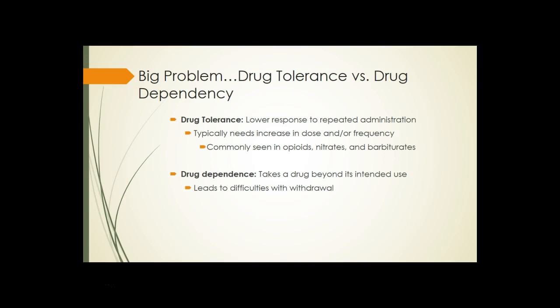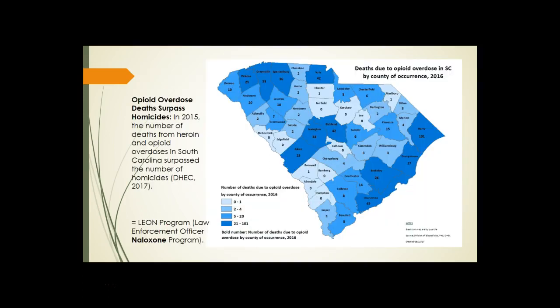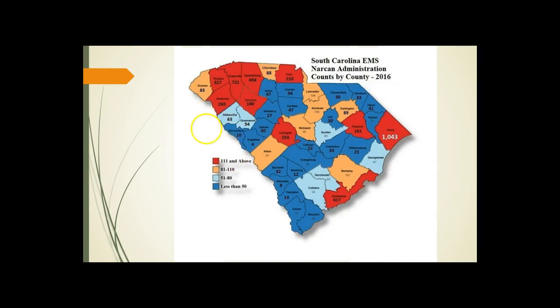Drug dependency is when somebody takes a drug beyond its intended use. This leads to difficulties with withdrawal — which is a significant problem right now in the United States, particularly in the Southeast with opioid overdose. The data here shows deaths from 2016, which has prompted the LEAN program, where law enforcement can administer naloxone or Narcan, the reversal agent.